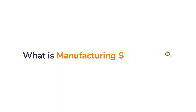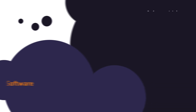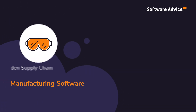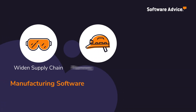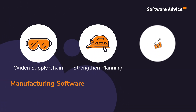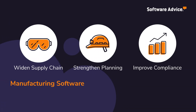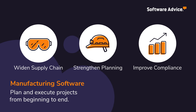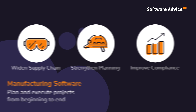What is manufacturing software? Manufacturing software widens supply chain visibility, strengthens production planning, and improves compliance management by utilizing functionality to plan and execute projects.